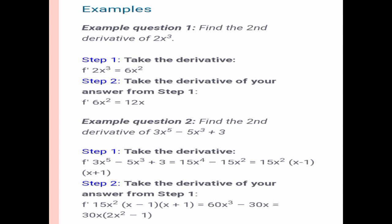Find the second derivative of 2x³. Step 1: Take the derivative. 2x³ is equal to 6x² because 2 times 3, or the exponent, which is 6. And step 2 is take the derivative of your answer from step one.